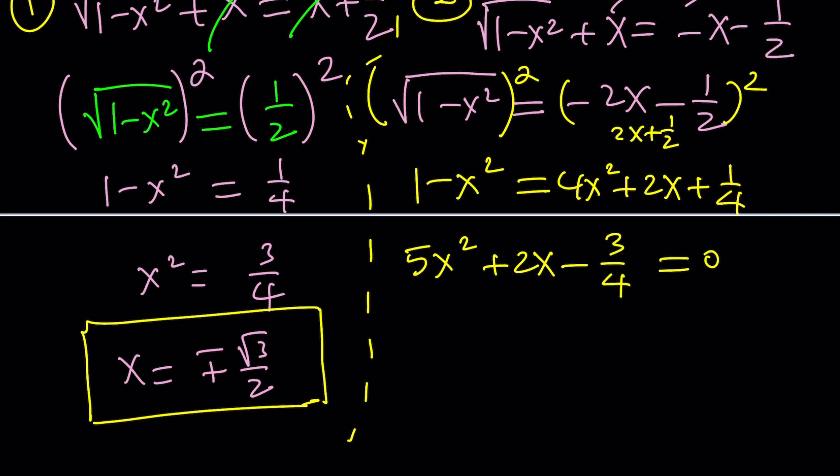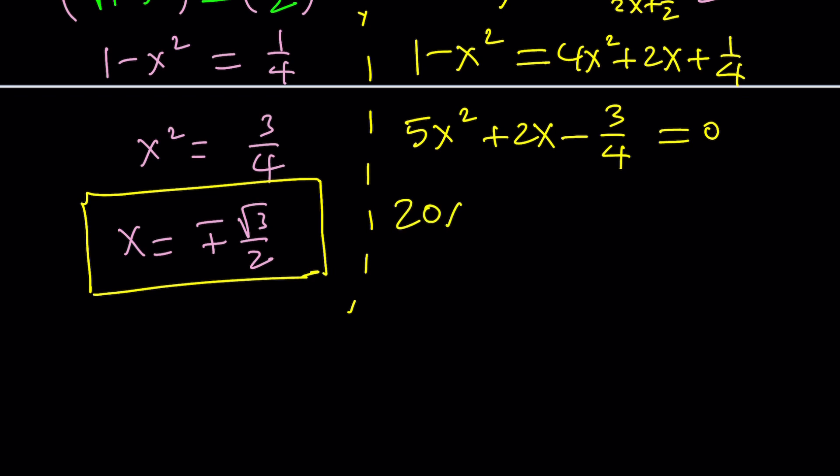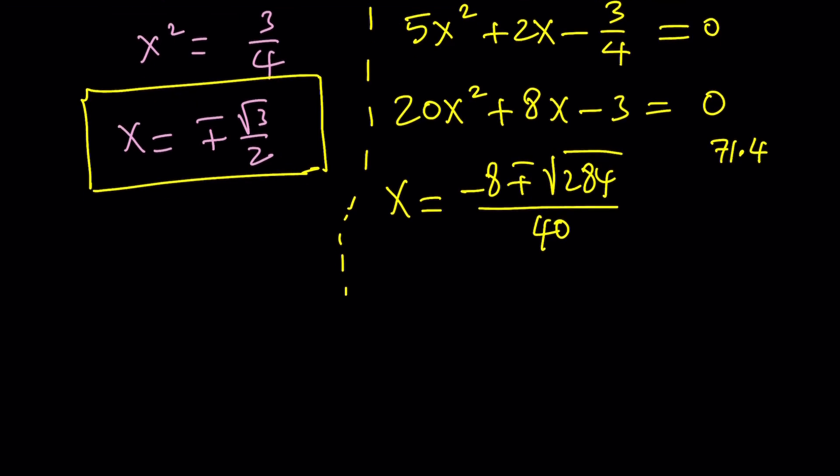Let's put everything on the same side. 5x squared plus 2x minus 3 fourths equals 0. 3 fourths came up again. I can multiply both sides by 4. If you're like me, I don't like fractions. Nobody likes fractions. And then from here, x becomes negative b plus minus the square root of b squared, which is 64, minus 4ac, which is 240. That's 284, I think, if I didn't make a mistake. Divide by 2a. 284 is 71 times 4, so 71 is prime. We can take out a 2. That gives us negative 8 plus minus 2 root 71 divided by 40, which we can write as negative 4 plus minus root 71 over 20. We can divide everything by 2, and that's all we can do.